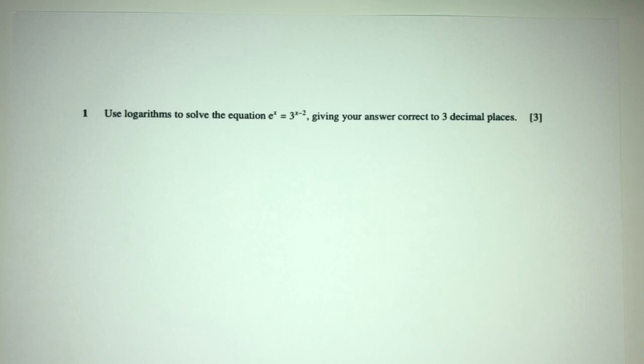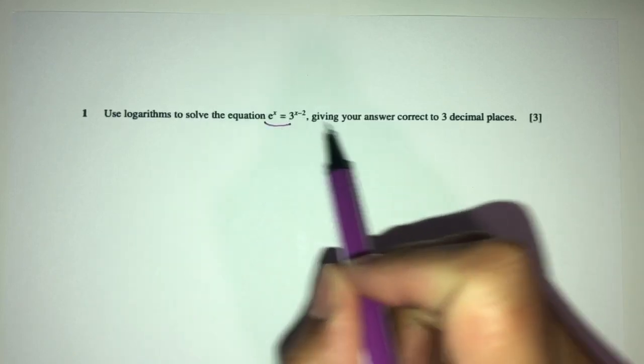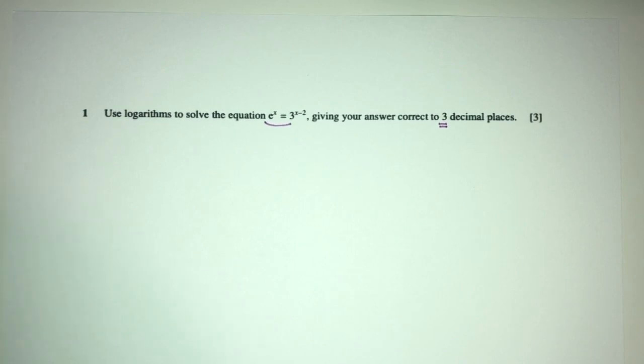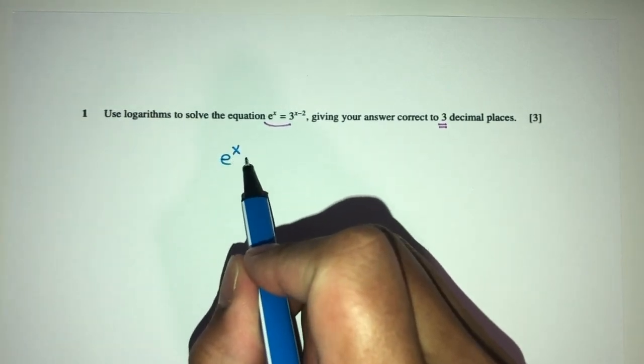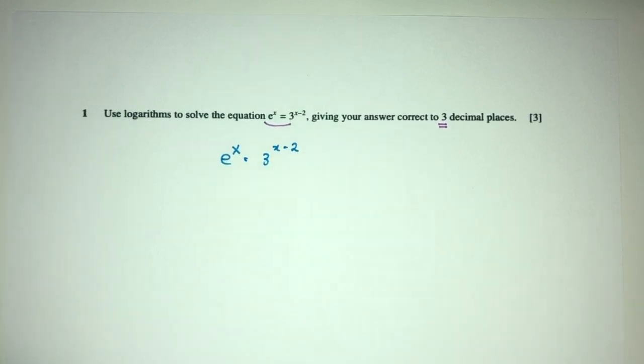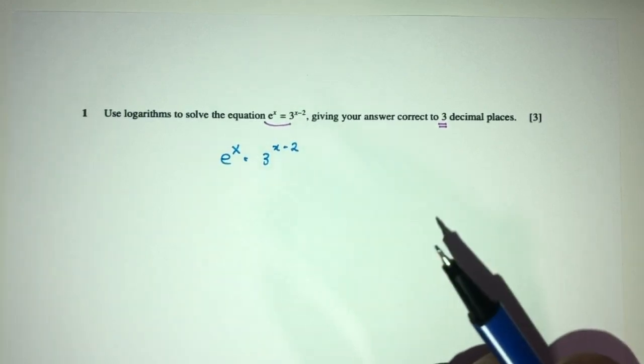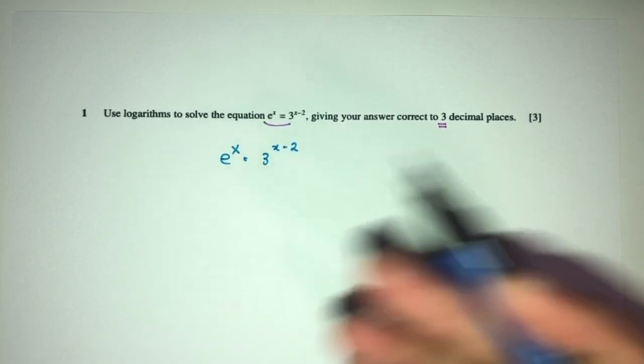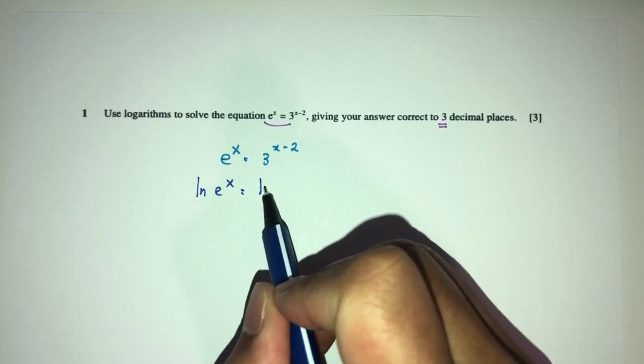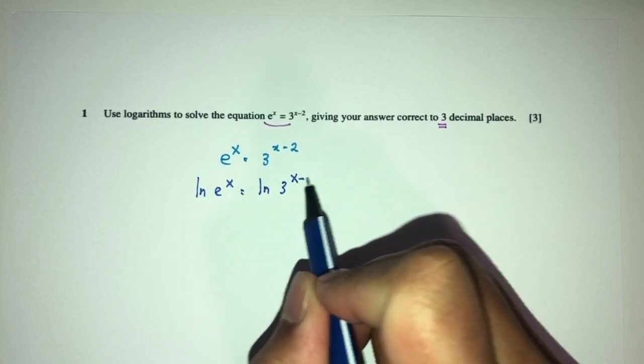Use logs to solve this equation, giving your answer correct to three decimal places. So one by one let's see what can we do. Here we have e^x = 3^(x-2). Now we use ln because we have exponential, so apply ln on both sides.